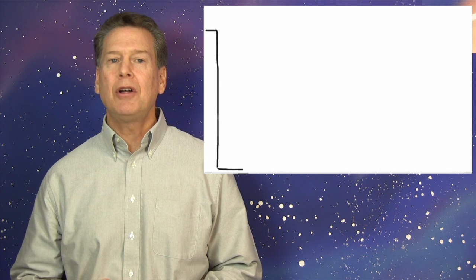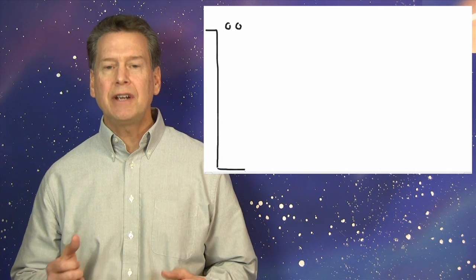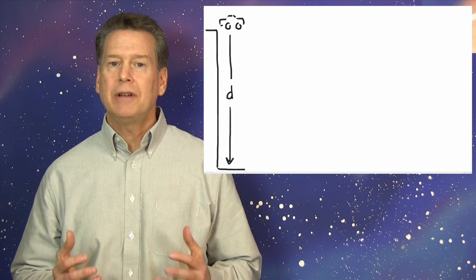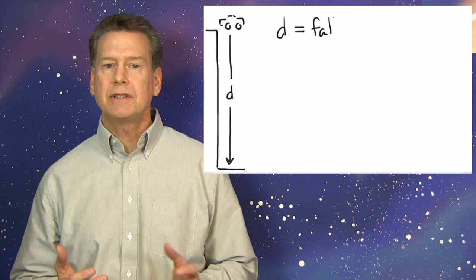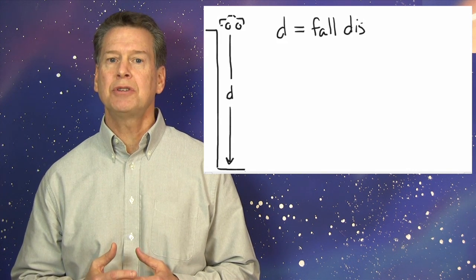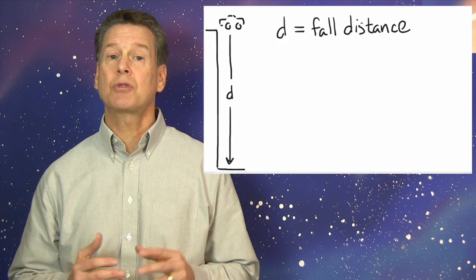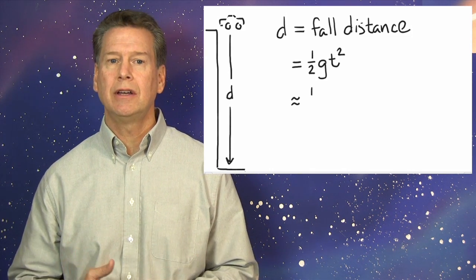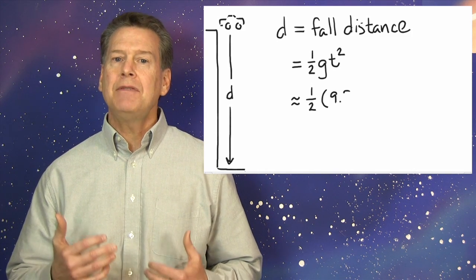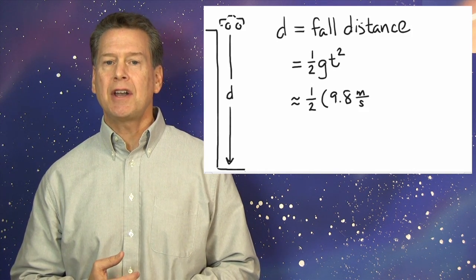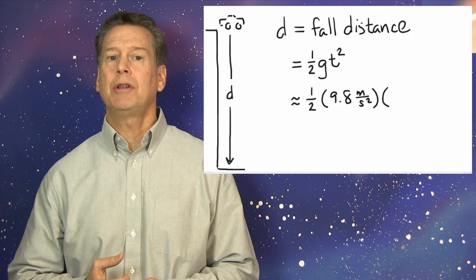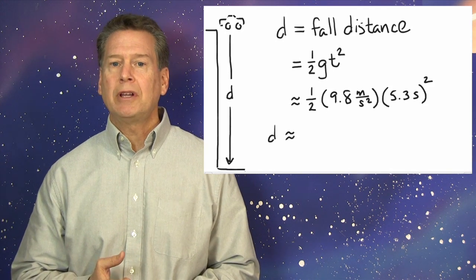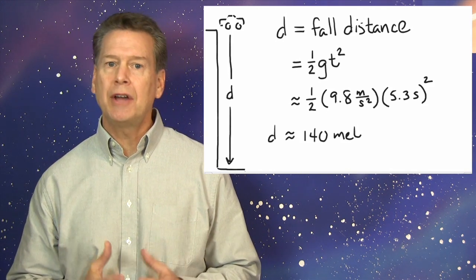Well, if we time how long the car takes to fall, we can use a very basic physics formula to calculate the fall distance. The formula is distance equals one-half times the acceleration due to gravity times the fall time squared, that is, d equals one-half g t squared. I made five distinct measurements of the fall time, and got an average value of 5.3 seconds. I hope you do it too. Check the video out. Time the fall.